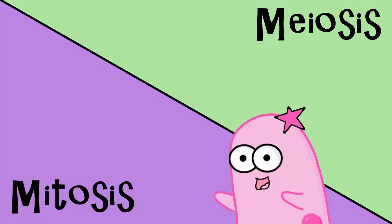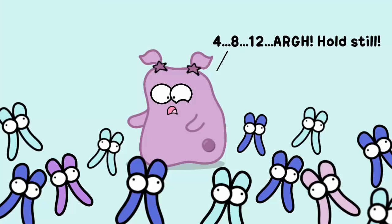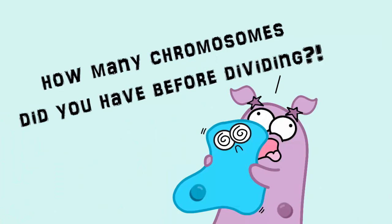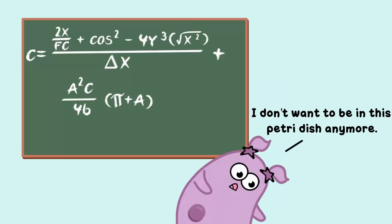If you have ever studied mitosis or meiosis, chances are the whole chromosome number thing has crossed your mind. How do you start out with a cell that has 46 chromosomes, and then it does mitosis, and then you end with two cells that each have 46 chromosomes? Or in meiosis, you end up with four cells that each have 23 chromosomes.